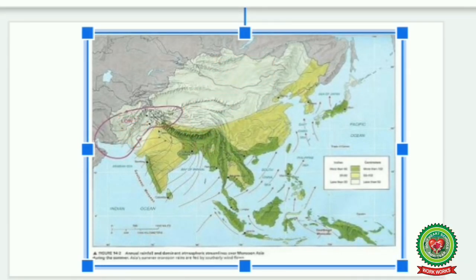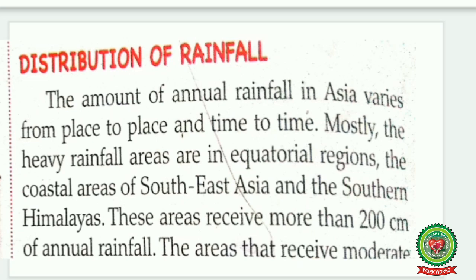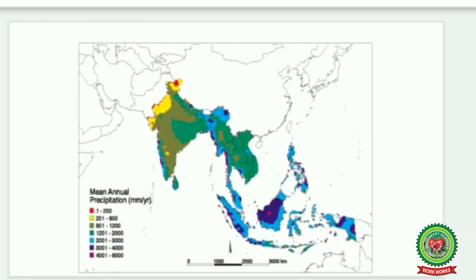Now let's do the reading of the distribution of rainfall. The amount of annual rainfall in Asia varies from place to place and time to time. Mostly the heavy rainfall areas are in the equatorial region, the coastal areas of Southeast Asia, and the southern Himalayas — as I have already shown you in the map. These areas receive more than 200 centimeters of annual rainfall.